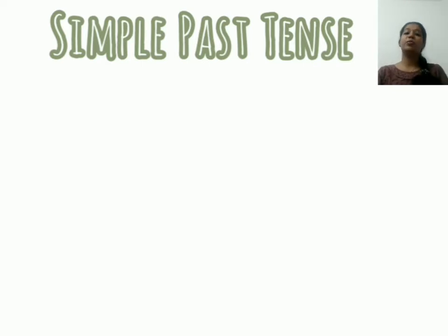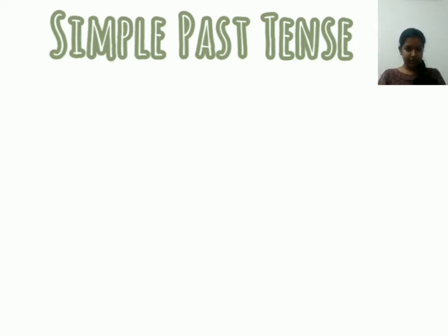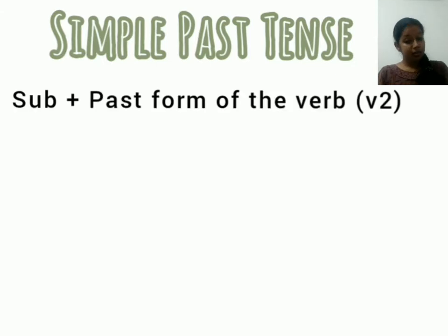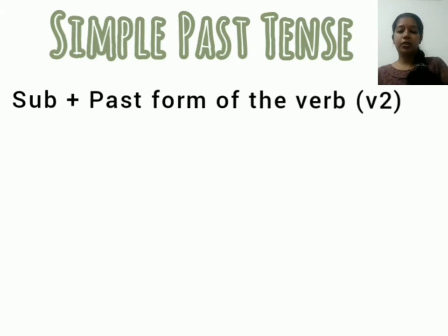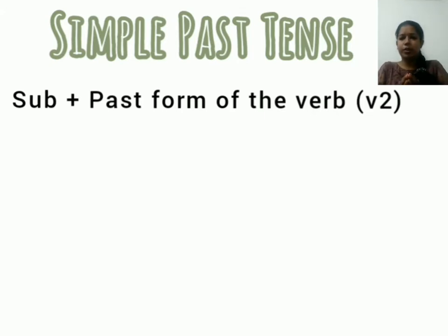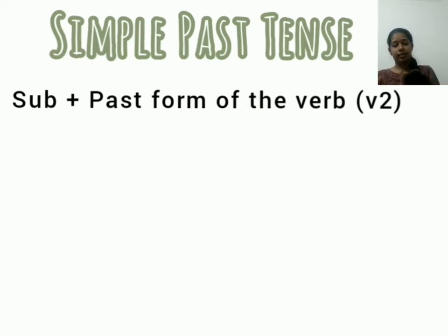Simple past tense is very easy — it's very simple. The format of simple past tense is subject plus past form of the verb, or V2, the second form of the verb. Here we do not need to differentiate between singular or plural — just write the past form of the verb as it is.